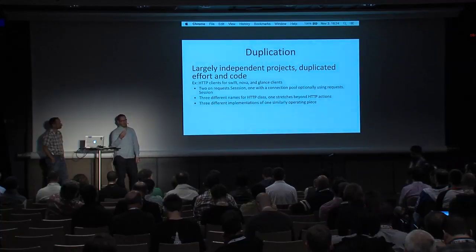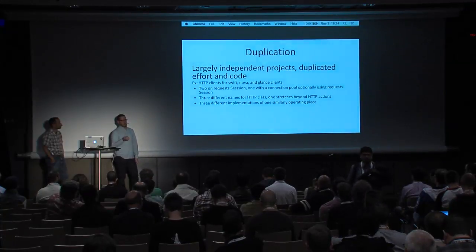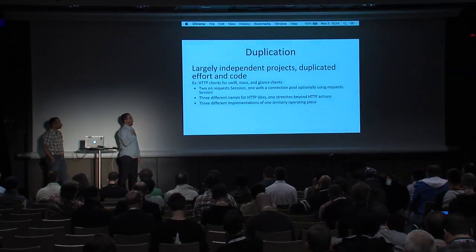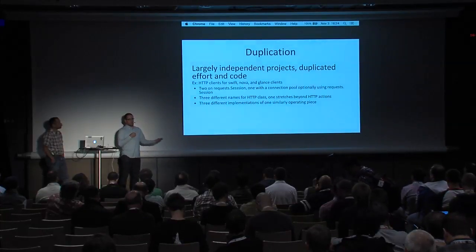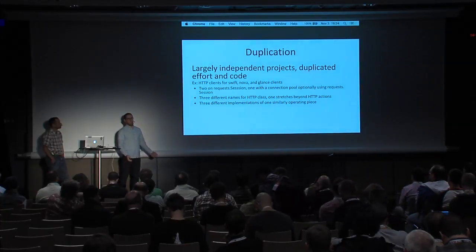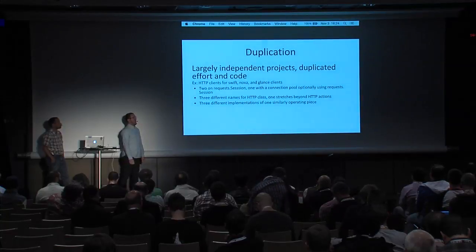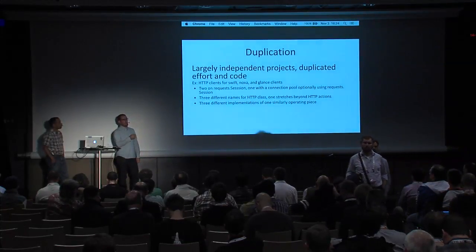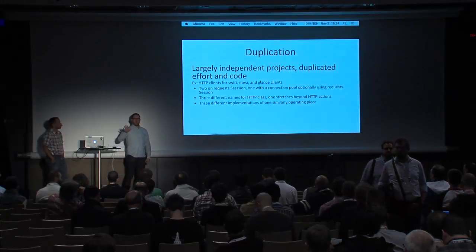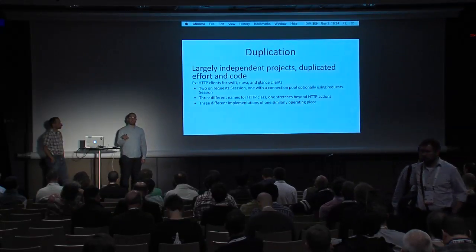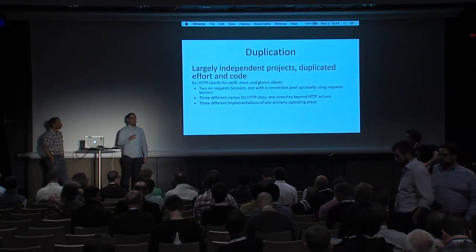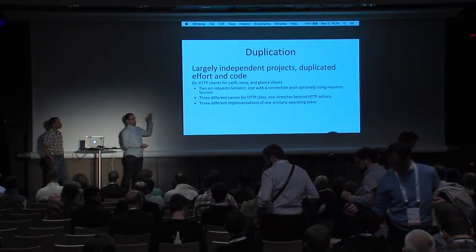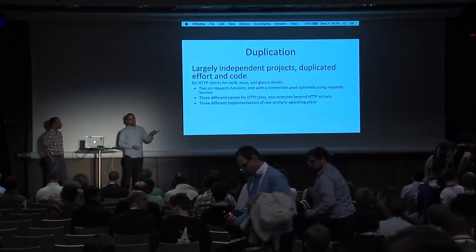If you look at how the big three originals — Nova, Glance, and Swift — have built their HTTP class: two of them are built on requests.session, which is the fairly common way. Nova uses its own connection pool that under the hood can use sessions. I'm not trying to slam that; I'm just saying that we're only looking at three things and we see two different implementations.